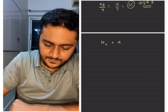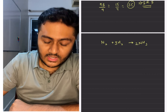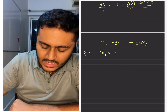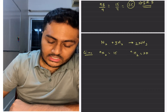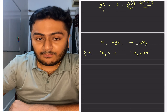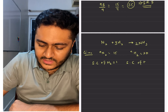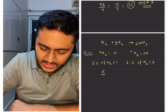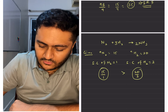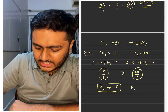Let's take Haber's process. After balancing the reaction, it is given that moles of N₂ is 15 and moles of H₂ is 20. We divide by stoichiometric coefficients: the stoichiometric coefficient of N₂ is 1 and of H₂ is 3. So 15 divided by 1 and 20 divided by 3 — the smaller of the two is that of hydrogen, which makes hydrogen the limiting reagent and N₂ the excess reagent.